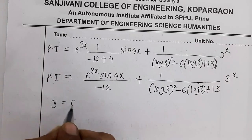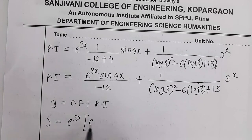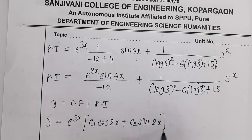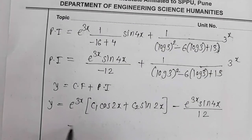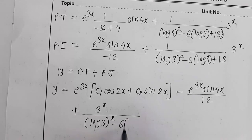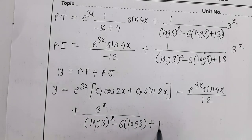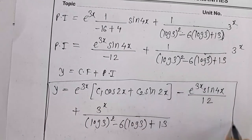The complete solution is y = CF + PI. Substituting: y = e^(3x)[c₁cos(2x) + c₂sin(2x)] - e^(3x)sin(4x)/12 + 3^x / [(log3)² - 6log3 + 13]. This is the final answer for the given example.